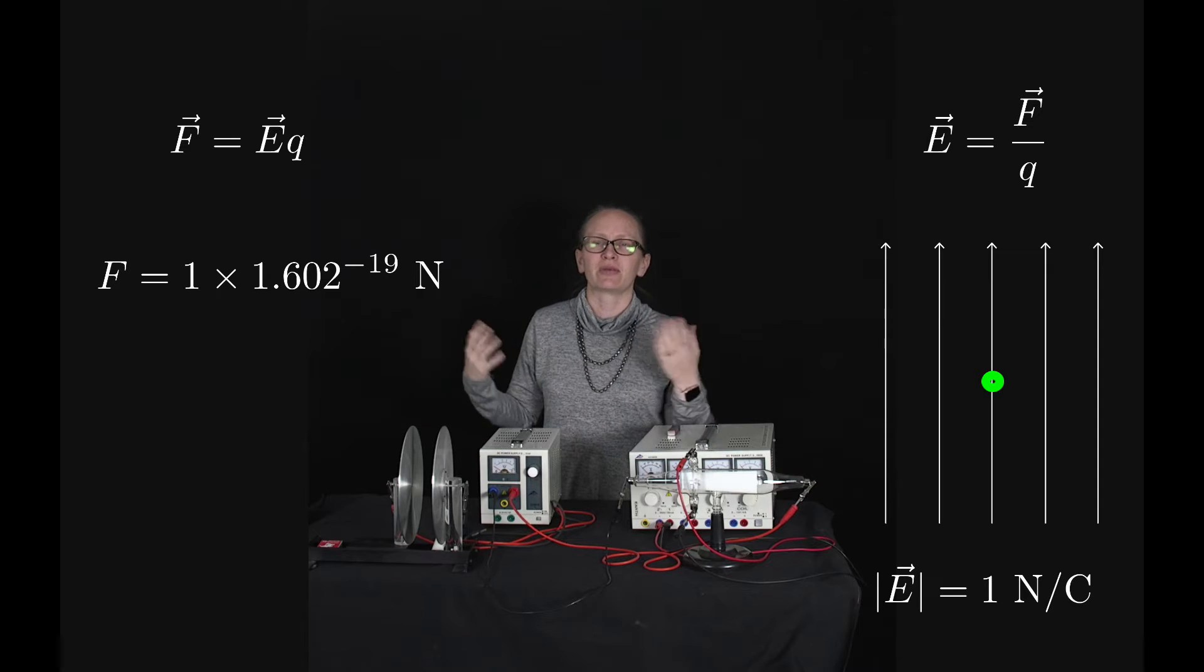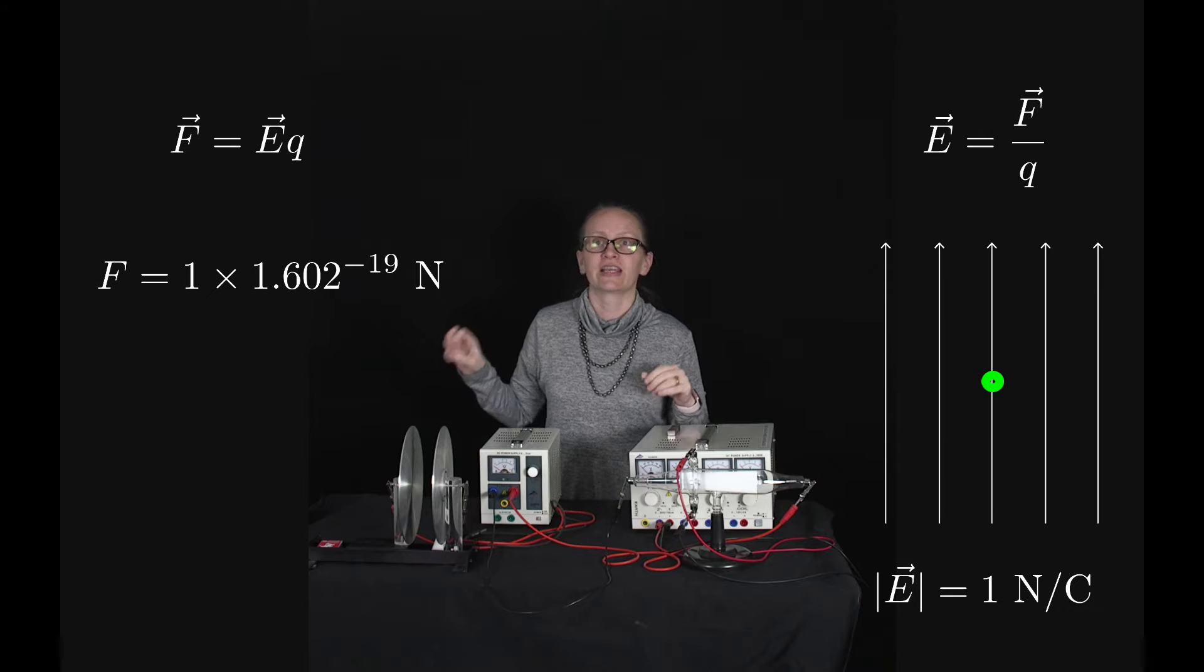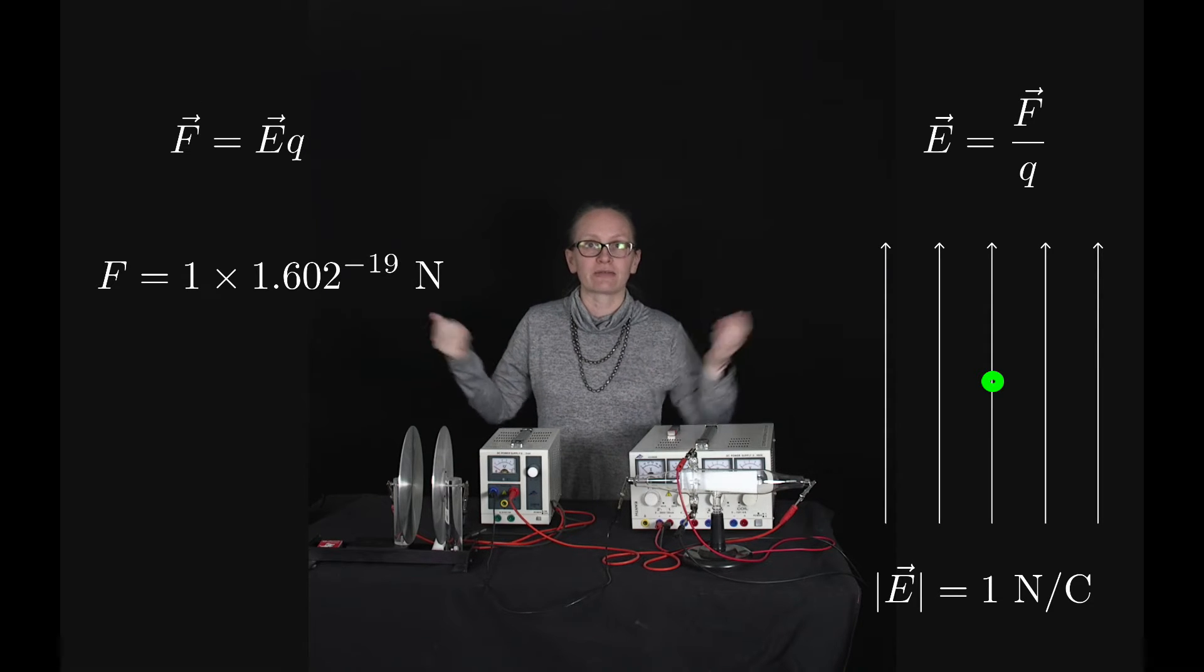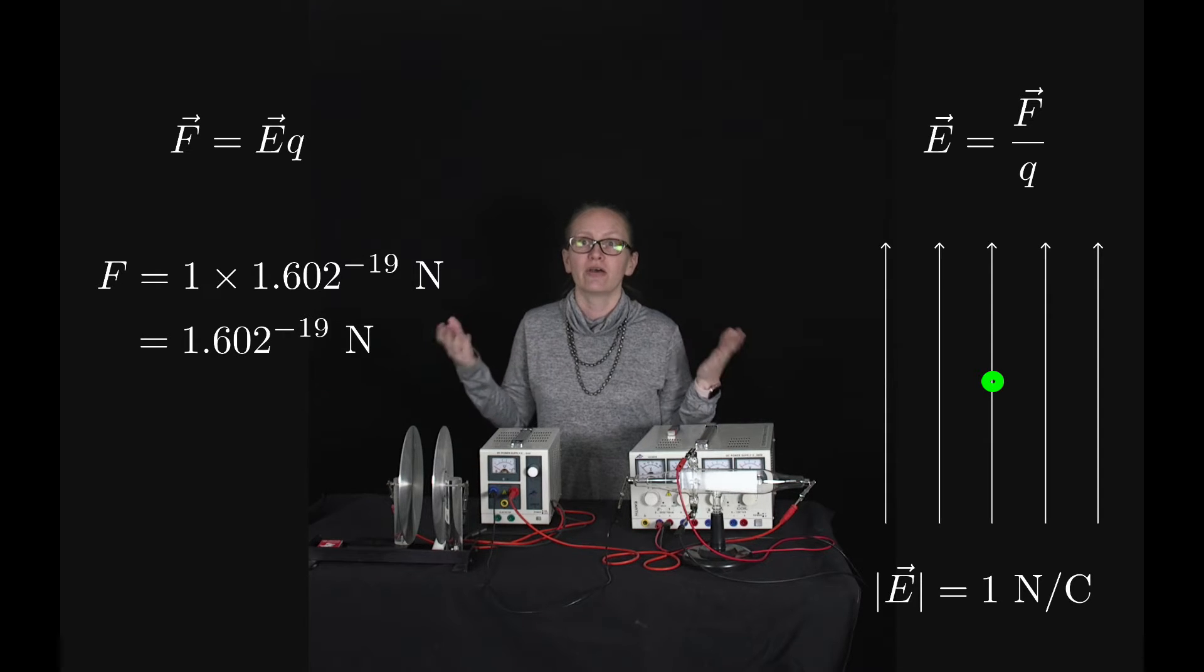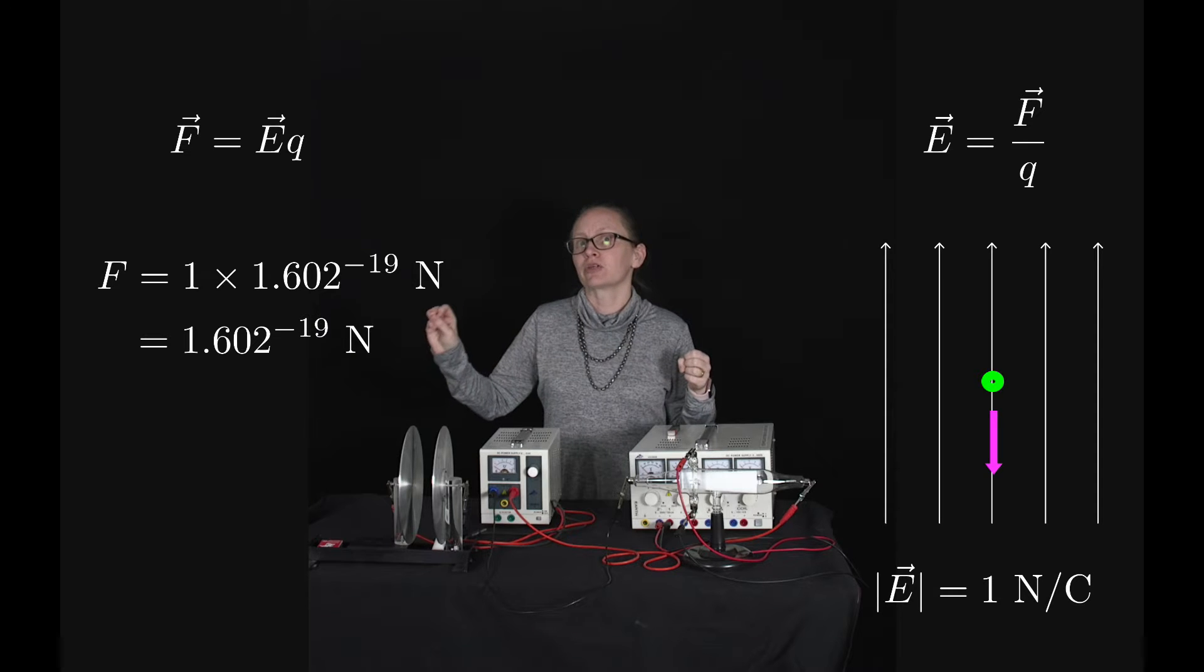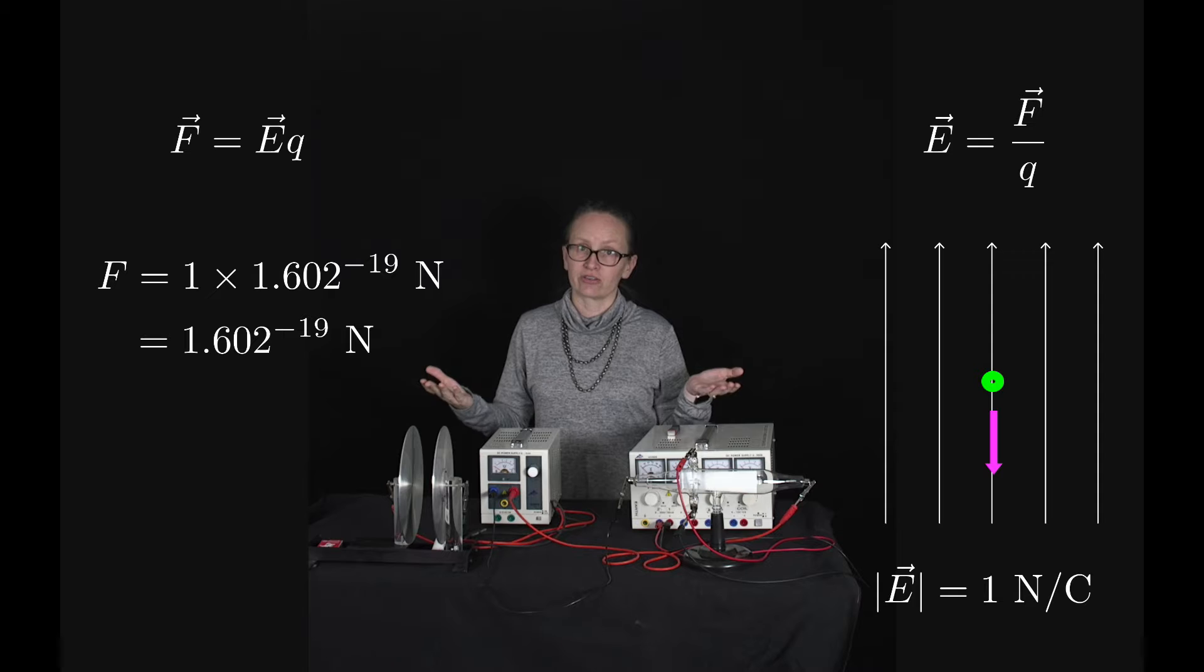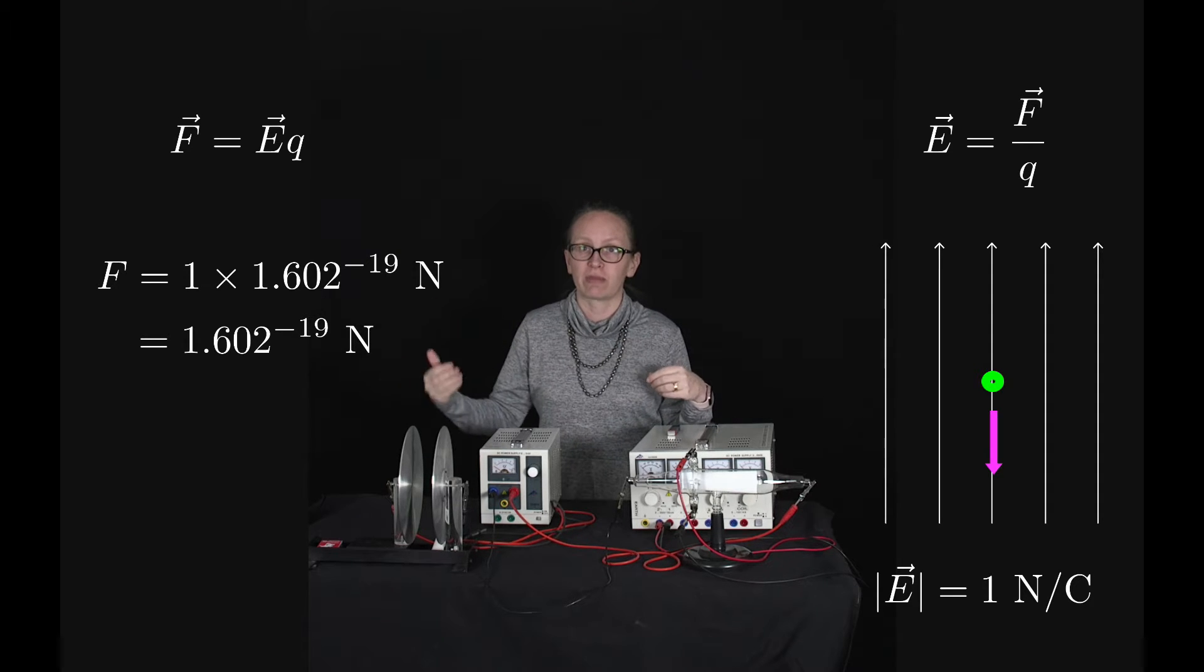It's got the negative sign but we can think about the negative sign when we think about the direction rather than including it in the equation. So when we do this multiplication we end up with 1.602 times 10 to the minus 19 Newtons. When we think about the direction, if the electric field is going up the screen then the force on an electron which is a negative particle is going to be down the screen, as the electric field lines show the direction of the force on a positive particle.